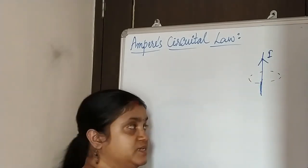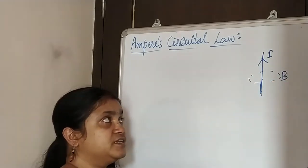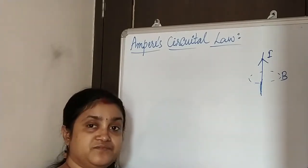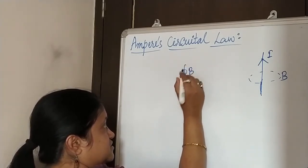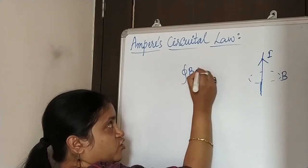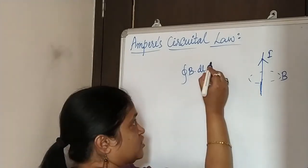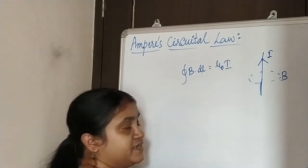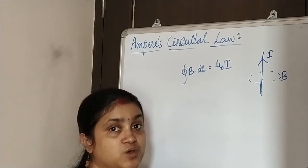Here, there would be a magnetic field B. The current moving through the wire would produce a magnetic field B. And the circular integral of magnetic field B dot DL — where DL is the line element — is equal to mu naught times I.